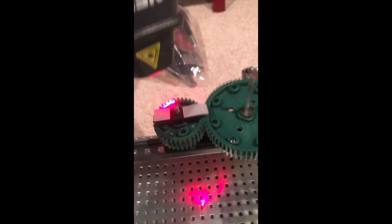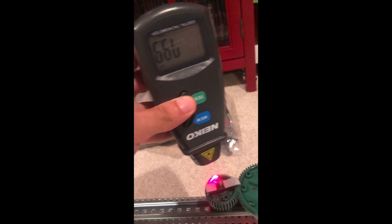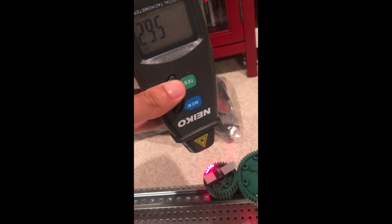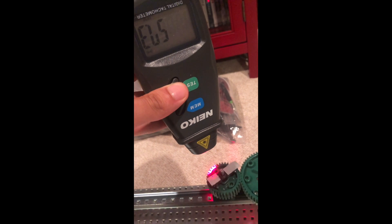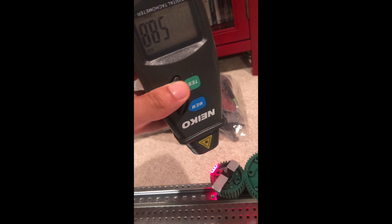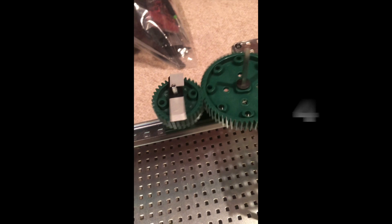Take the tachometer. We are getting around 60 RPM. So we're using two pieces of reflective tape, so it'll come out to around 30 RPM.